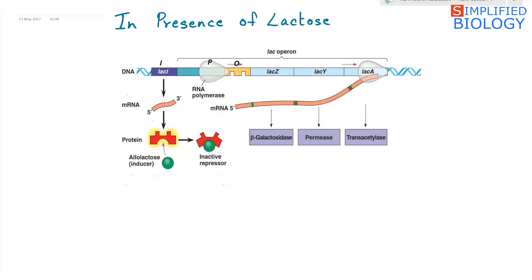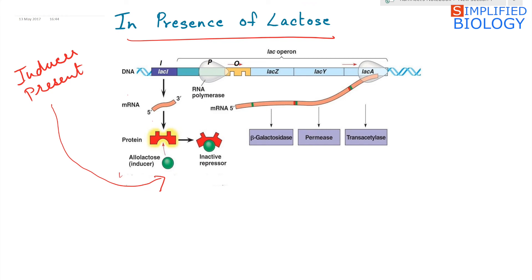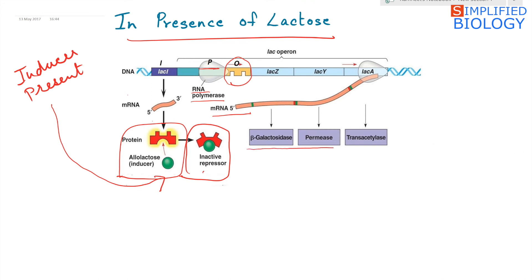In the presence of lactose, the inducer is present. This inducer binds with the repressor produced by the regulator gene, making it inactive, due to which the repressor cannot bind to the operator. Hence, RNA polymerase binds with the promoter, transcription and translation occur, and the Z, Y, and A genes transcribe and translate to form the proteins beta-galactosidase, permease, and transacetylase. This is how gene regulation takes place in prokaryotes.